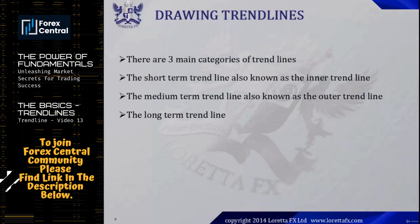There are three main categories of trend lines. We have the short-term trend line, also known as the inner trend line; we have the medium-term trend line, also known as the outer trend line; and we have the long-term trend line. Later on in the course I will teach you how to draw these three types of trend lines.